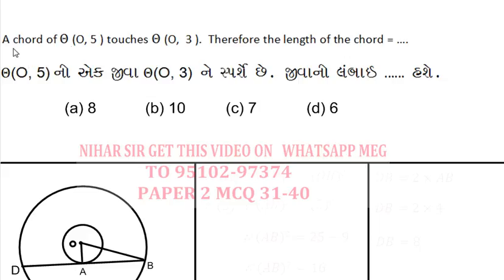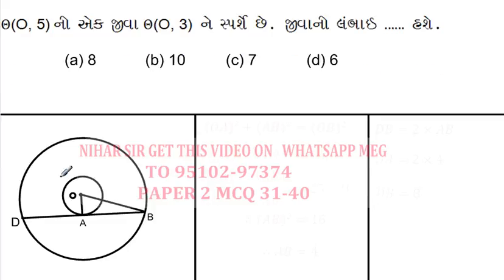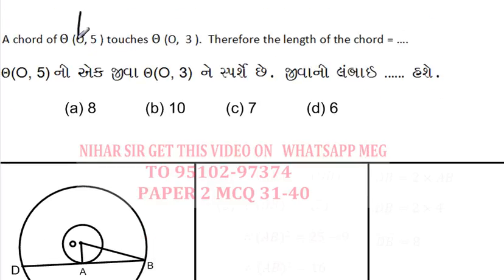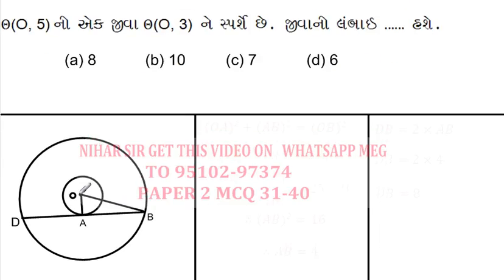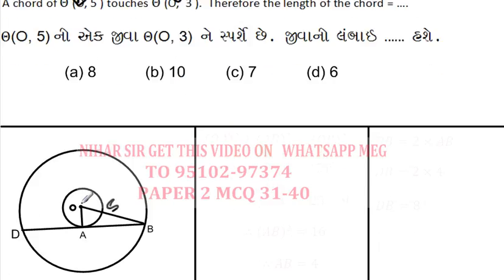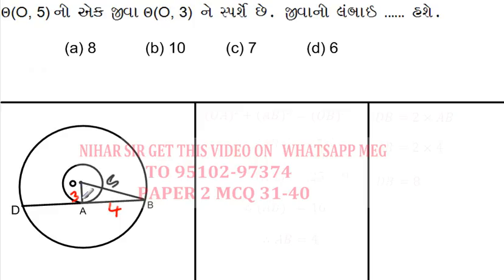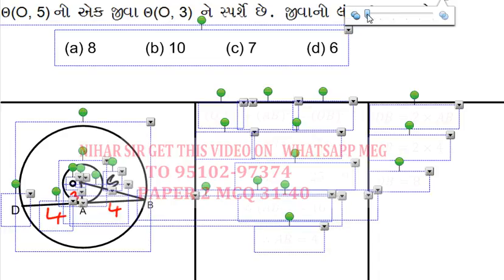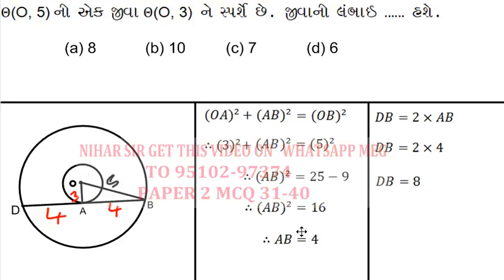Next: there are two concentric circles with center O. The radius of the bigger circle OB is 5 and the smaller circle OA is 3. Using the Pythagorean theorem, AB = √(5² − 3²) = √(25 − 9) = √16 = 4. Since the radius bisects the chord into two equal parts, the full chord length is 4 × 2 = 8.